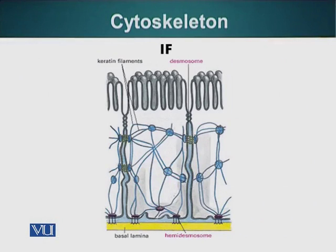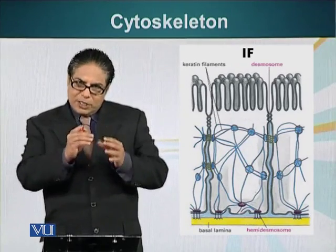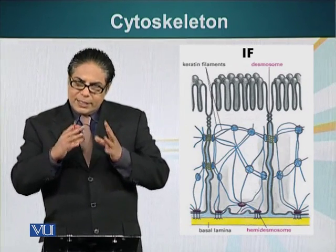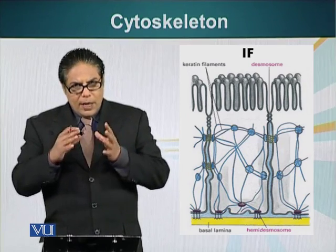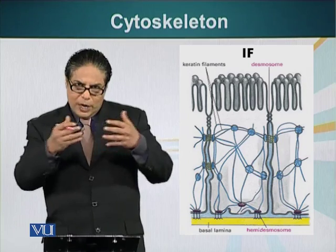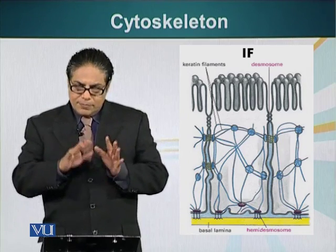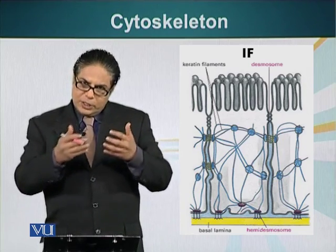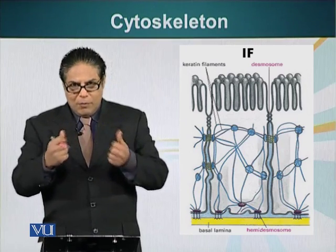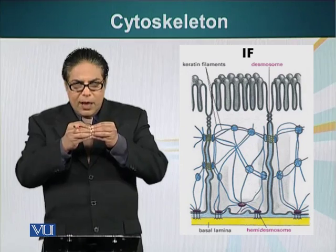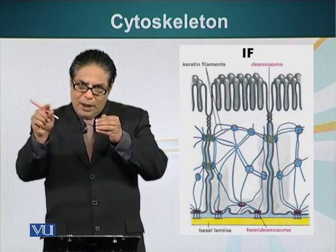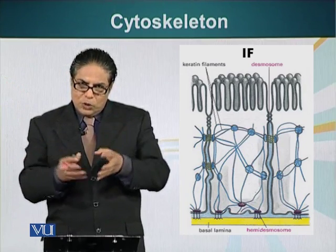Let me show you a diagram of how they do that. There is a network of intermediate filaments in the three-dimensional space of the cell. These intermediate filaments terminate at special points present on the plasma membrane. These special points are called desmosomes or hemidesmosomes. Hemidesmosomes and desmosomes have one single function: to connect cells to an adjacent cell or the extracellular matrix.